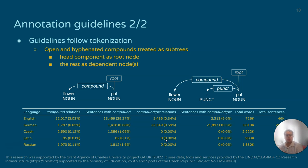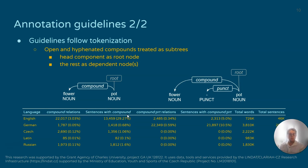Regarding open and hyphenated compounds, those are at the moment treated as subtrees with the head component as the root node. The practice of using the compound relation differs significantly from language to language — we can see that in English, 30% of all sentences in English treebanks contain at least one compound relation, which is in contrast to Latin or Czech, and we'll see why in a moment.